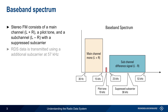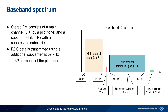RDS data is transmitted using an additional subcarrier at 57 kHz, which is the third harmonic of the pilot tone. This signal is modulated using binary phase shift keying at a data rate of 1187.5 bits per second.